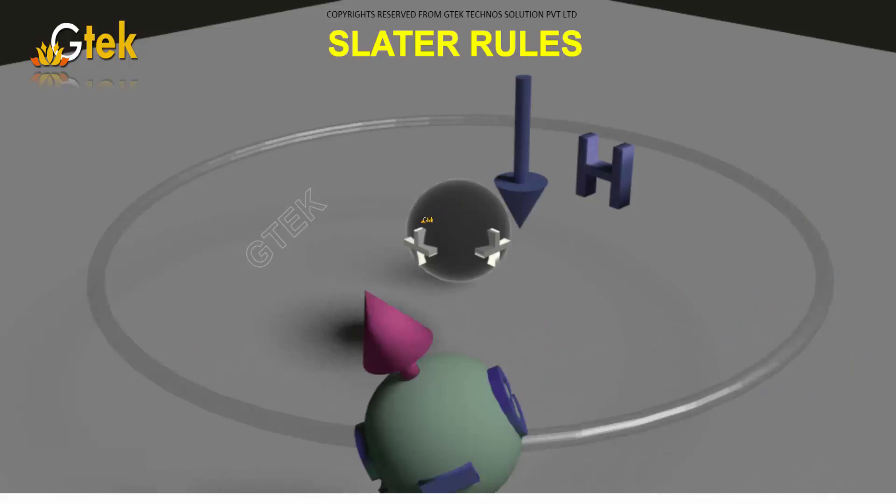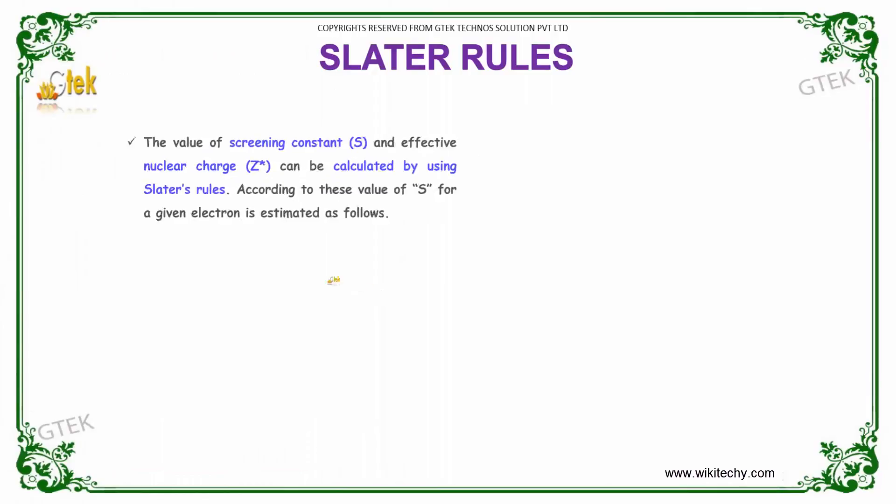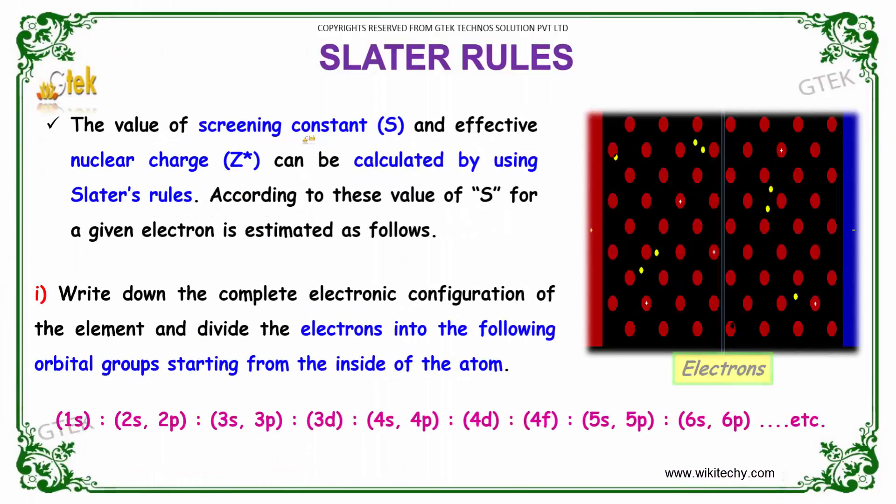So, let's move on to the very important area that's Slater Rules. The value of screening constant and effective nuclear charge can be calculated by using Slater's Rules. According to this value of S for a given electron is estimated as follows. I got the electronic configuration for an atom.